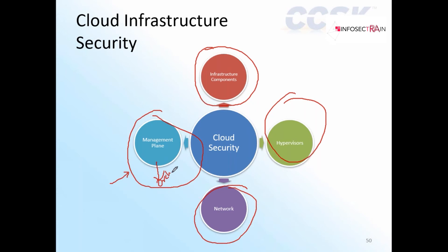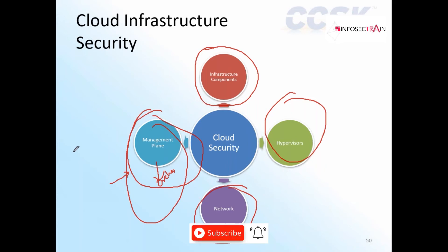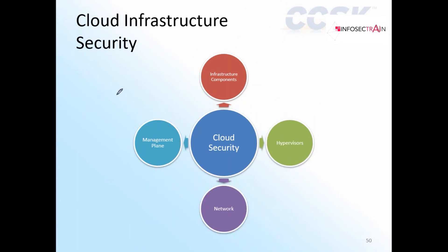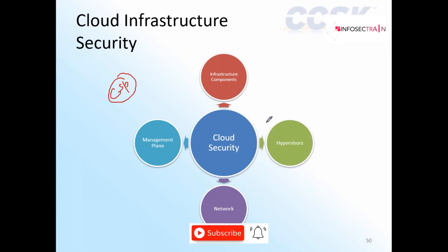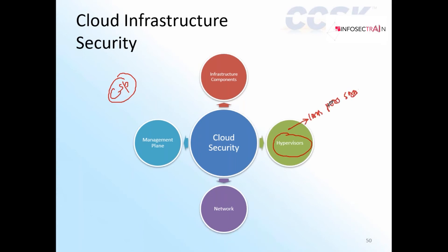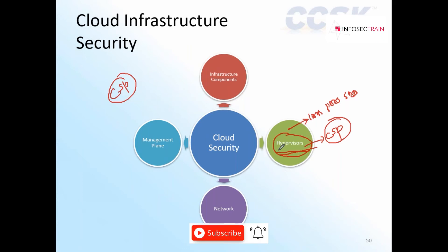The management plane and orchestration layer can be seen as a single line. Each component requires different levels of access controls and different security requirements. In this course, we discuss things from both the cloud service provider and the consumer perspective. For example, in any cloud model — IaaS, PaaS, or any service model — the hypervisor is always managed by the cloud service provider, not the customer. They must follow proper standards and mechanisms to ensure the hypervisor is 100% secured.